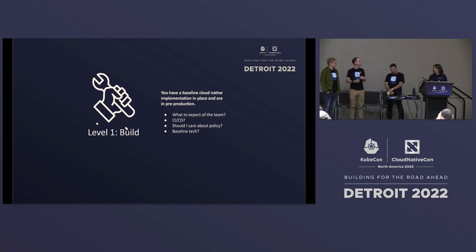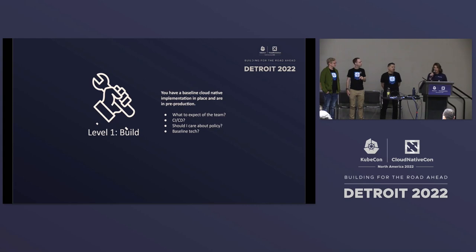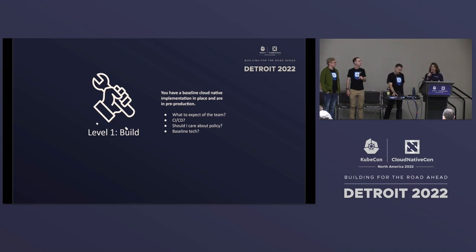The final point in Level 1 is around what you should be communicating to the business — something the industry and technologists don't always do well. In Level 1, the maturity model talks about setting KPIs that the business understands. They're not going to care about why you chose one tech over another, but they should understand: because we're doing this, we're going to ship code faster by X amount of time, and we're going to measure it. You might not have all the metrics yet, but definitely spend the time to put the KPIs in place that your business leaders will understand.